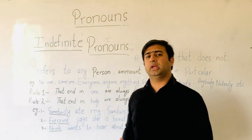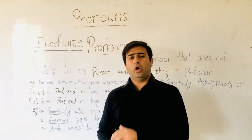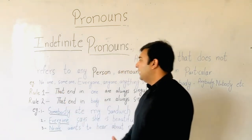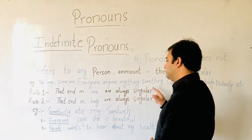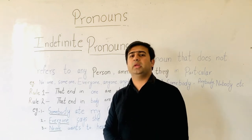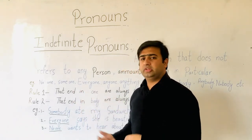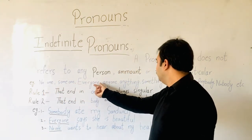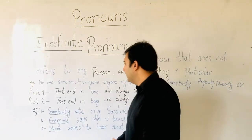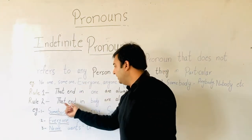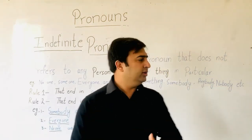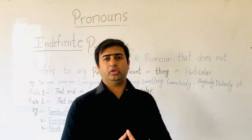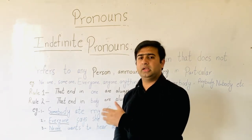Now let's see the rules — how can we identify indefinite pronouns? Rule number one: words ending in 'one' are always singular. This means someone, no one, everyone, and so on. Rule number two: words ending in 'body' are always singular. Body means nobody, anybody, somebody. These are the rules while using indefinite pronouns.